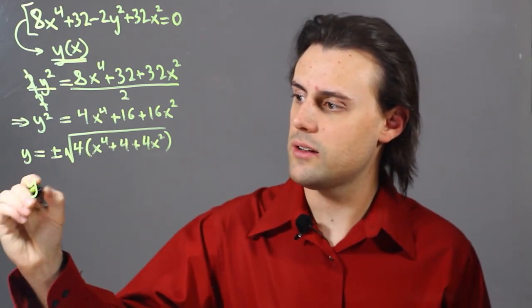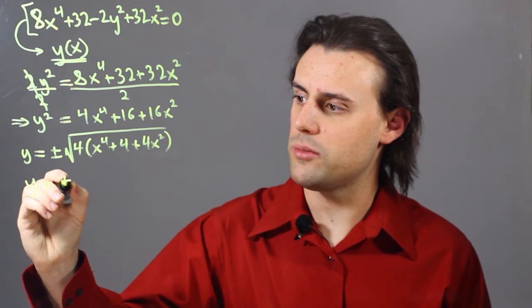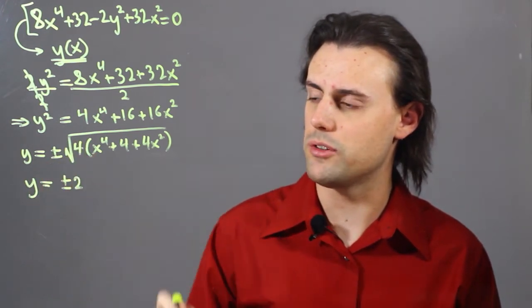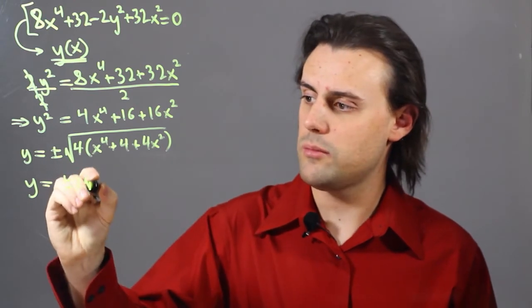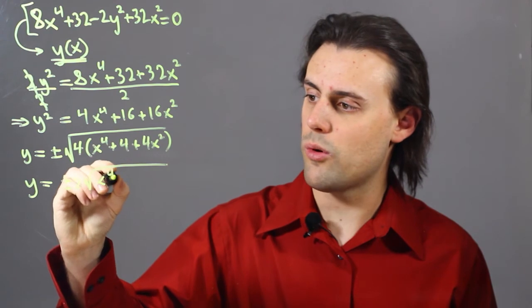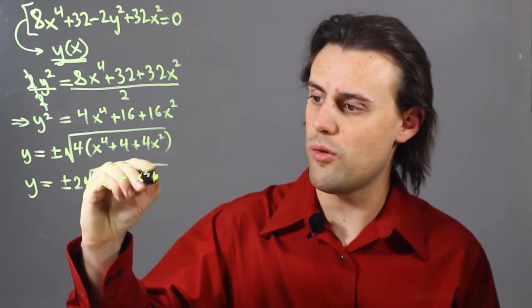This will simplify to y is equal to plus minus 2, because the square root of 4 is simply equal to 2, times the square root of x to the fourth plus 4x squared plus 4.